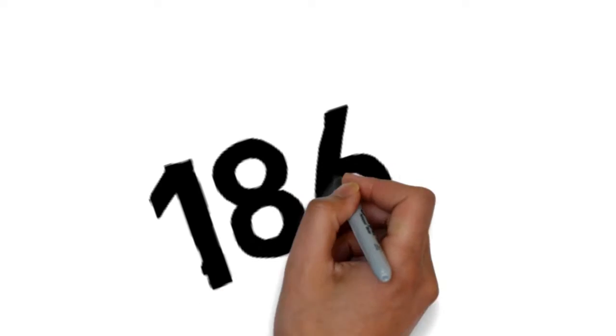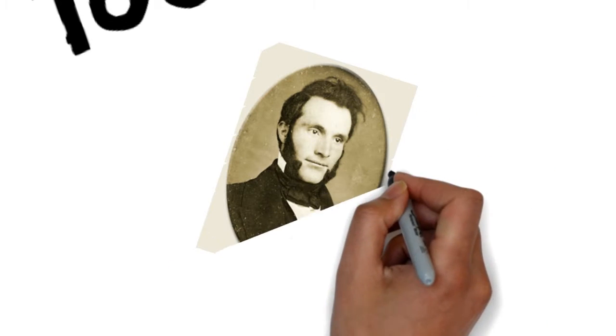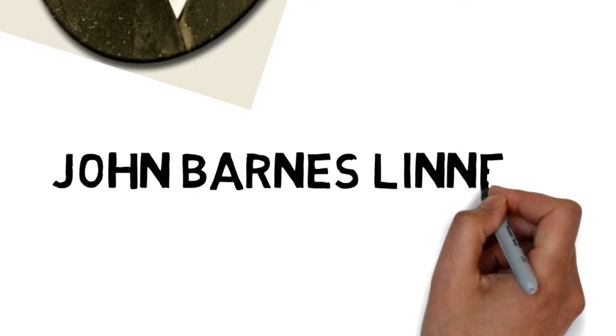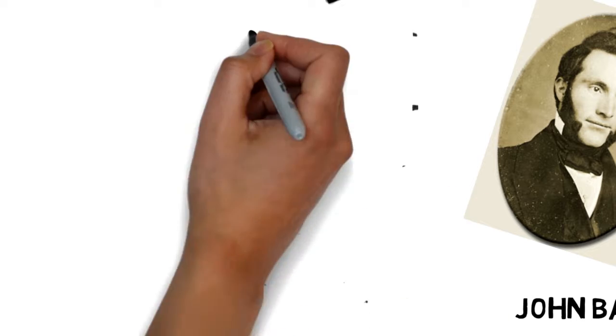The flip book appeared in 1868 when it was patented by John Barnes Leonard. The flip book looks like a small notebook that you hold in one hand while you flip over the pages with the thumb of the other hand.